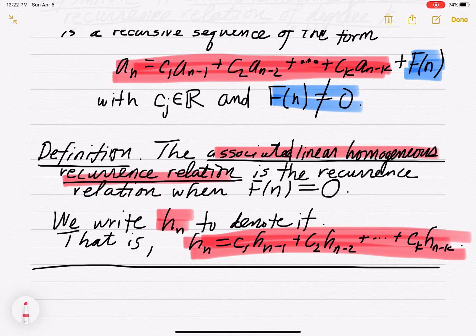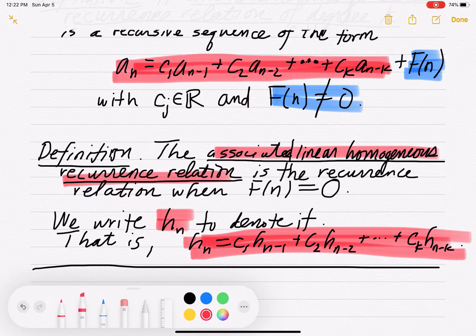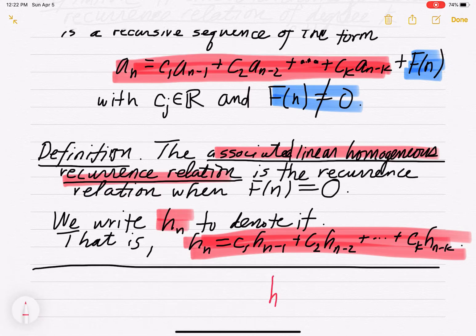I don't even bother putting the blue Fn on the end — we just let it be zero. Your book, rather than calling it Hn, calls it An superscript H, like that — An of H. I'm going to be using Hn for the associated homogeneous part.